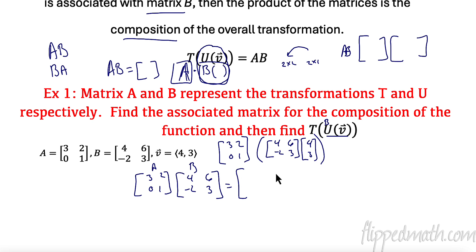So I have 2 by 2 by 2 by 2. I'm going to have a 2 by 2 in my end. So first row times my first column, so 3 times 4 is 12, and 2 times negative 2 is negative 4. First row, second column, 3 times 6 is 18, and 2 times 3 is 6.